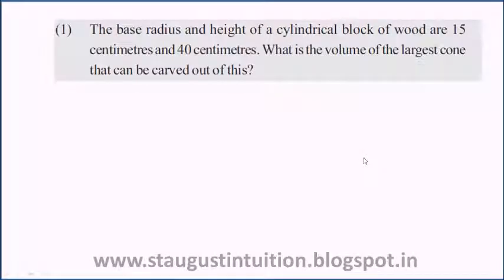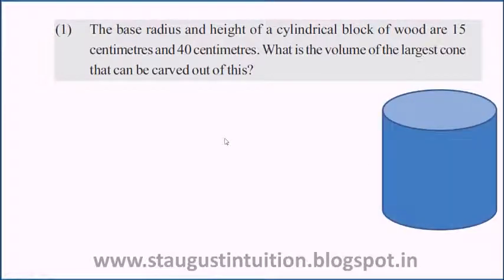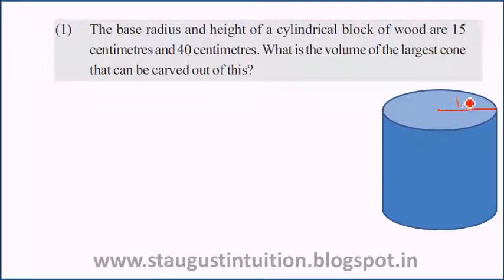The base radius and height of a cylindrical block of wood are 15 cm and 14 cm. This is a cylinder. The base radius is 15 cm and height is 40 cm.